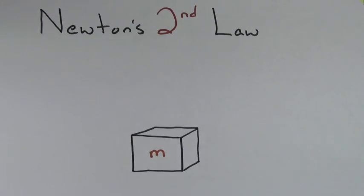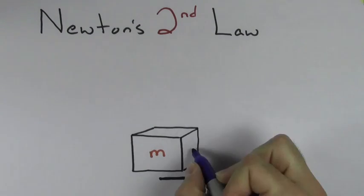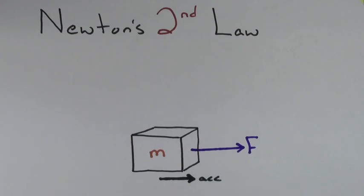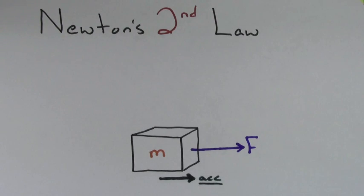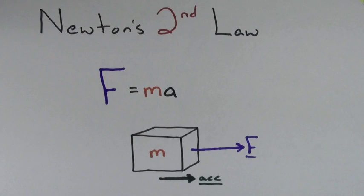Newton's first law told us you'll only get acceleration if there's a force on an object. What Newton's second law tells us is how much acceleration you're going to get for a given amount of force. Newton's second law in equation form says that the force equals the mass times the acceleration.